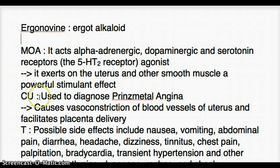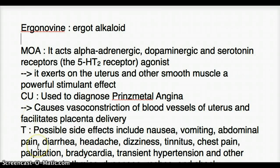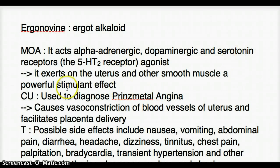When we talk about clinical use, we can see how the mechanism of action is directly related to it. Ergonovine is used to diagnose Prinzmetal angina, and it makes sense because Prinzmetal angina is due to vasospasm of the cardiac blood vessels. Vasospasm can be caused by alpha-adrenergic agonism and serotonin agonism.